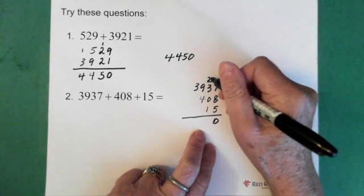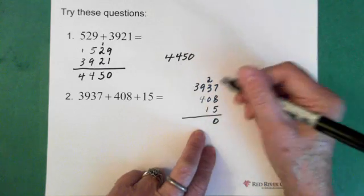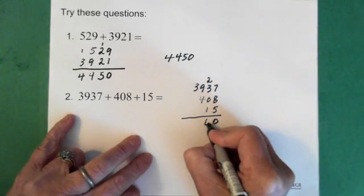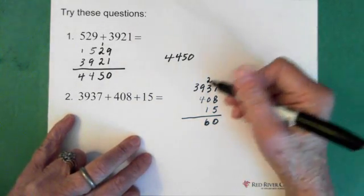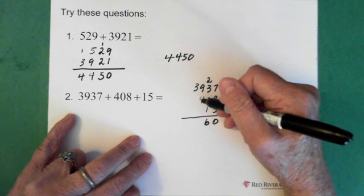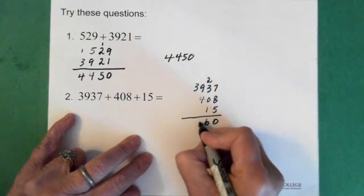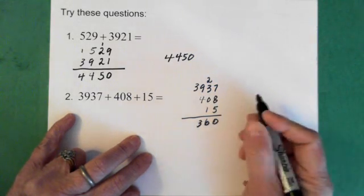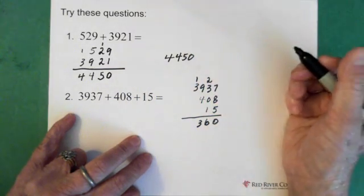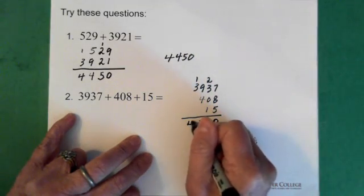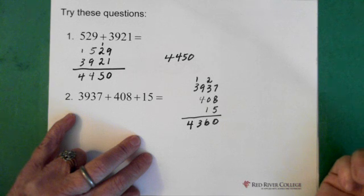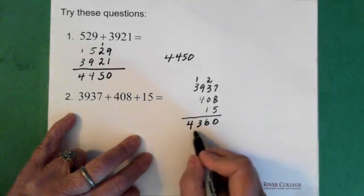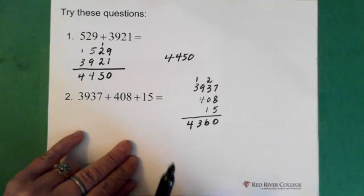We add this up, we end up with 5, 6. 6 goes here. 9 plus 4 is 13. So the 3 goes down here, the 1 goes up here, and we add those together, and we got 4360. So 4360 would be the answer to this question.